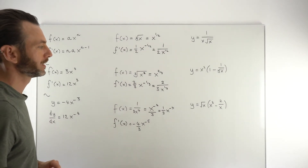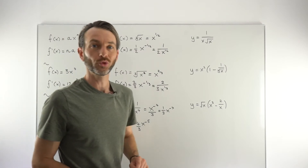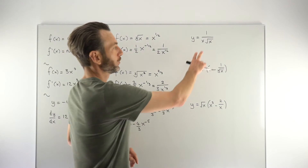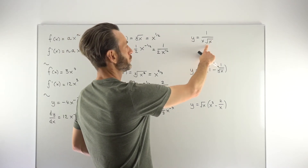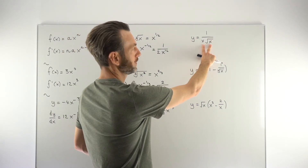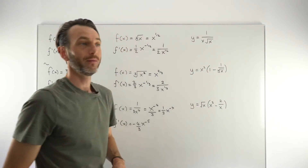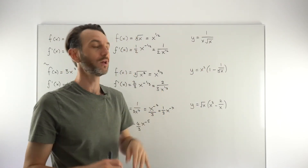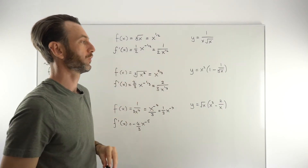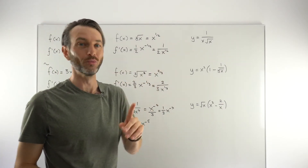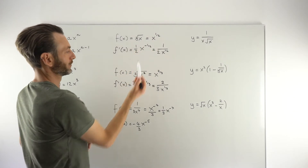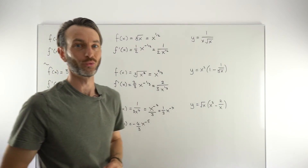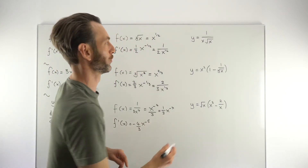Let's look at some slightly more complex examples that need a little more sorting out. A few things going on here: we've got a square root, a product of functions, and a fraction. That implies we might need at least three lines of working to get this into a differentiable format. Don't think it's always just one move — sometimes you need multiple lines of working.